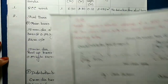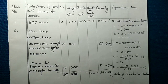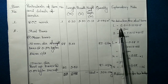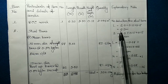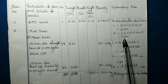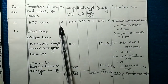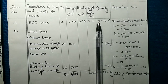Coming to the estimating part, you need to prepare a table. The first item of work will be RCC work. For RCC work, the actual length is 6.3 meters and the breadth is 3.3 meters, and we have the depth as 12 centimeters. Multiplying all these together, we can get the quantity as 2.495 cubic meters.